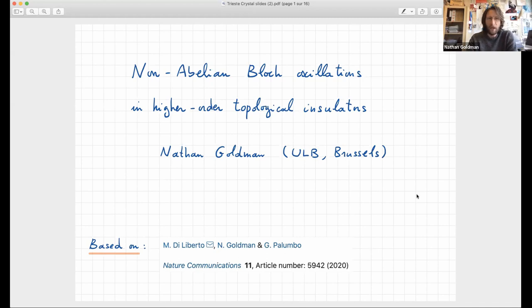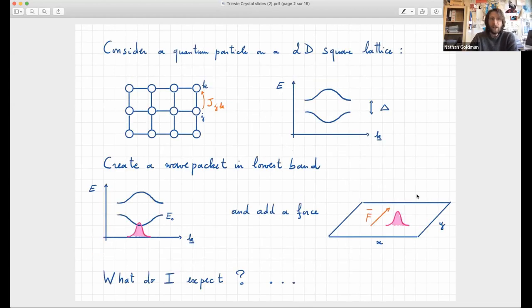All the things I'm going to present today can be found in this publication which appeared last year. So since this is about Bloch oscillations, let me first start with a little pedagogical introduction. Let's start with the problem of a quantum particle in a 2D square lattice. This is really a generic 2D square lattice with some hopping j_jk which connects sites j and k. And let's assume that we have some generic band structure associated with this lattice. The only non-generic thing is that we're going to assume that there is some gap in the structure. The idea will be to create a wave packet in the lowest band of this energy spectrum and add a force along some direction. The main question I'm going to address in the next couple of minutes will be, what do I expect in this rather generic situation?